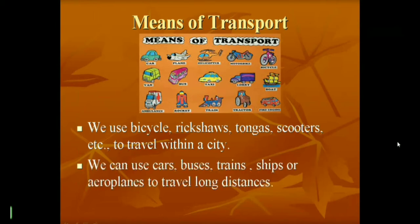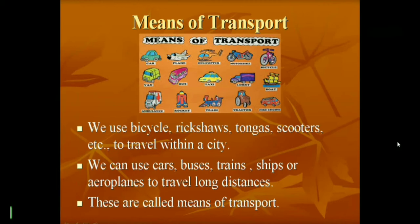We can use cars, buses, trains, ships, or aeroplanes to travel long distances. These are called means of transport. Means of transport refers to vehicles used for travelling from one place to another — they can transport goods or people. Bicycles, rickshaws, tongas, buses, and trains all come under means of transport.